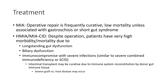Treatment: For HMIA, operative repair is frequently required, with slow morbidity and risk of short gut syndrome. For HMIA-CID, prognosis is very poor — patients have very high morbidity and mortality due to long-standing gut dysfunction, barrier dysfunction, and severe infections from immunocompromise. Intestinal transplant may be curative, as the immune system can be reconstituted by donor graft lymphoid tissue. However, severe graft-versus-host disease may occur.